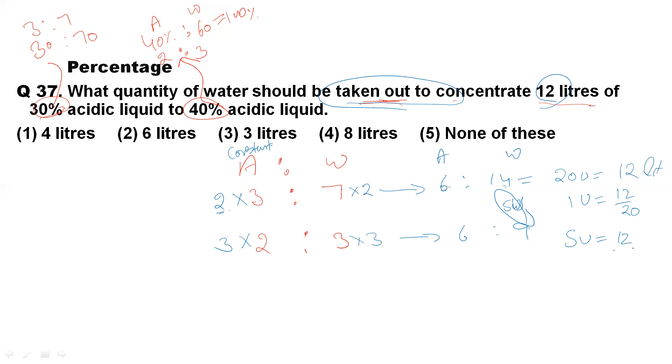That means 5 units will be equal to 12 divided by 20 for one unit, multiplied by 5. That means it will come out to be 3. That is option number 3. So for this question, the answer is option number 3.